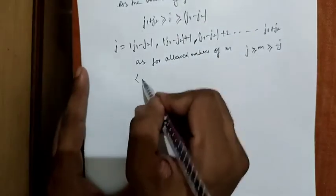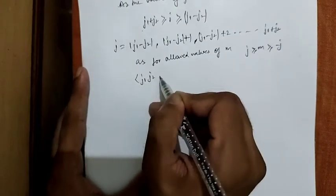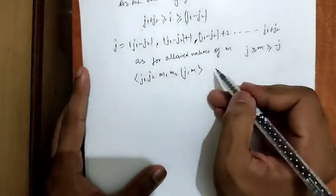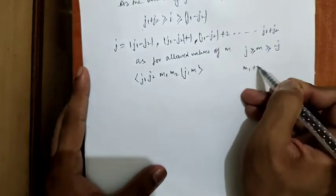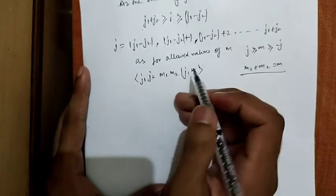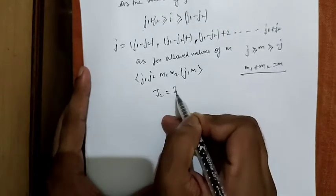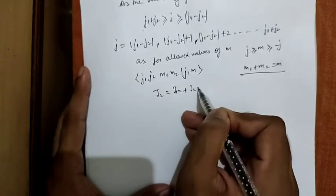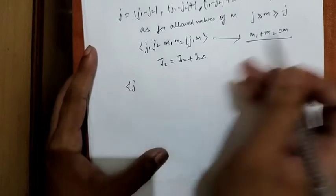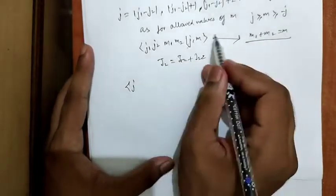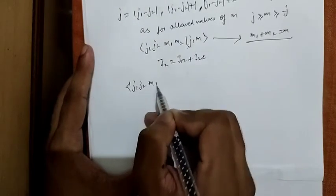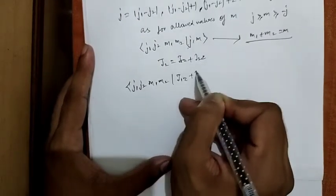Now consider the Clebsch-Gordan coefficient ⟨j1 j2 m1 m2 | jm⟩. This coefficient will vanish unless m1 + m2 equals m, as we know that Jz equals j1z plus j2z. When the operator j1z + j2z operates on this coefficient, we get the condition relating m1, m2, and m.